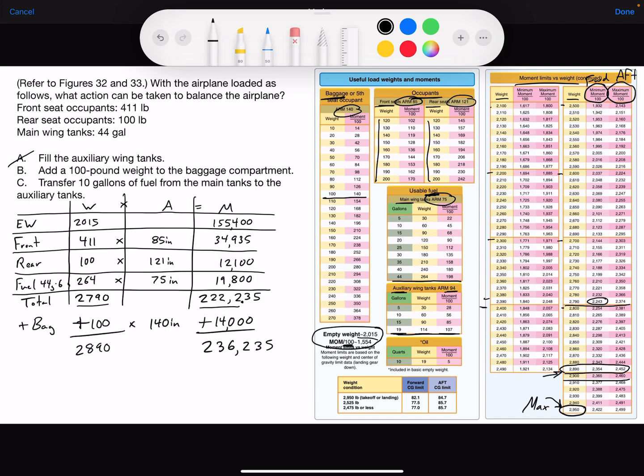And we look at our moment here. If it's in hundreds, we'll put a decimal there. So we're looking at 23,62. And 23,62 is above our minimum and below our maximum. So we are within weight and balance limits just by adding 100 pounds to the baggage compartment. So answer bravo works.